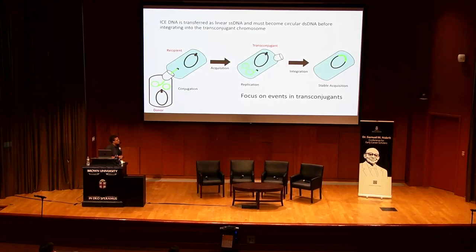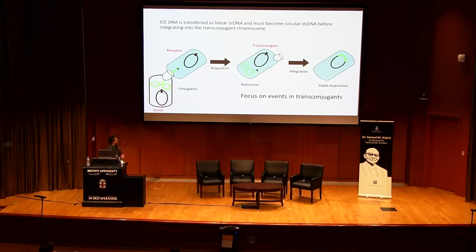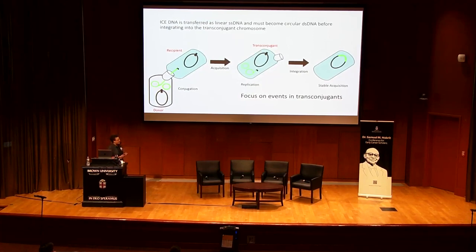When I joined the lab, I really wanted to focus on events in transconjugants — something that had not been done in the field up until that point. I wanted to answer some very basic questions: how long does it take from the initiation of conjugation for integration to occur? What are the sequence of events the element must go through? How does regulation impact that procession? And what aspects of the element lifecycle are absolutely critical for acquisition?